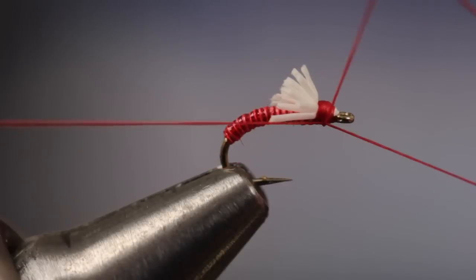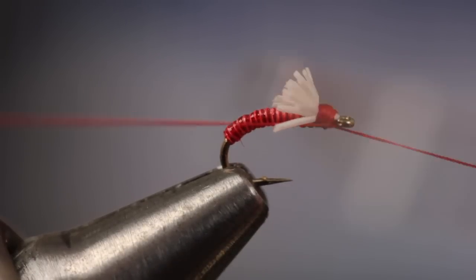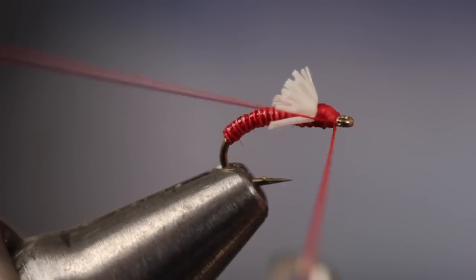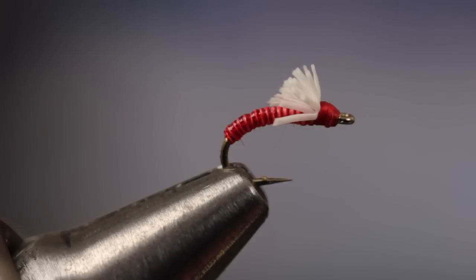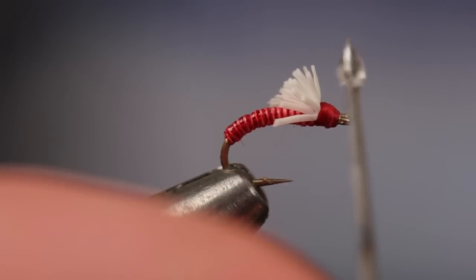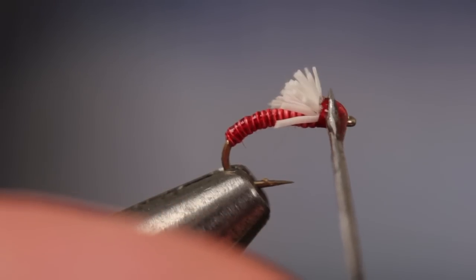You can then do a 4 to 5 turn whip finish and snip or cut your tying thread free. A small drop of head cement applied to the wraps will make sure everything stays where it belongs.